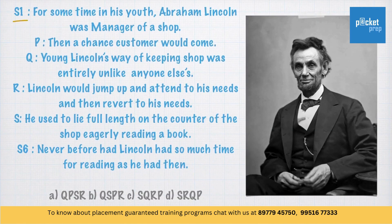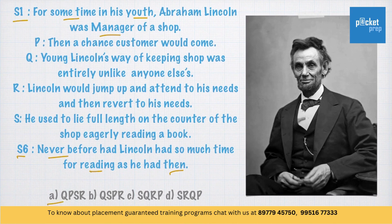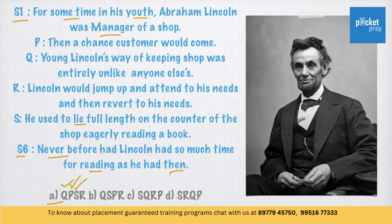Here is another question. Statement 1 says: 'For some time in his youth, Abraham Lincoln was manager of a shop.' Statement 6 says: 'Never before had Lincoln had so much time for reading as he had then.' Let's scan the options. Let's try Option A first. After statement 1, Q comes: 'Young Lincoln's way of keeping shop was entirely unlike anyone else.' Then P: 'Then a chance customer would come.' Then S: 'He used to lie full length on the counter of the shop, eagerly reading a book.' When a customer would come to the shop, the response of Abraham Lincoln was not justified in Option A. So Option A is wrong.